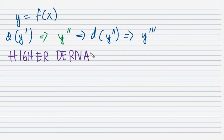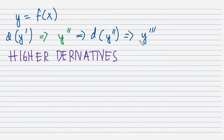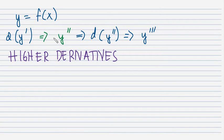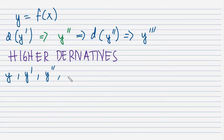Higher derivatives, or getting a higher derivative, simply means that you have to get the derivative of the first, then get the derivative of the second, get the derivative of the third, in order to solve what is required in a problem, or what order of derivative is required of you in the problem.